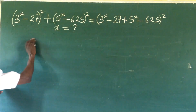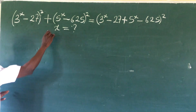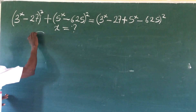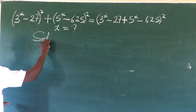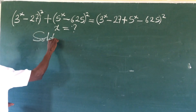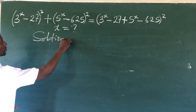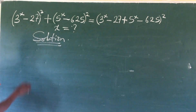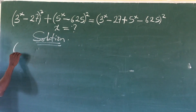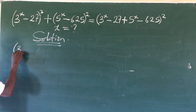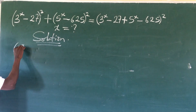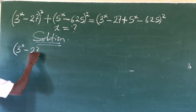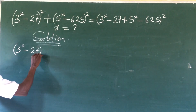Now let's go to the board and see what this gives us. We are looking for the value of x, so let's take our solution. We pull down the question: we have (3^x − 27)² plus...